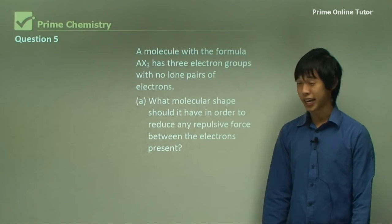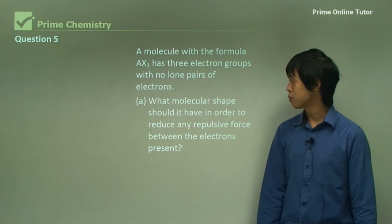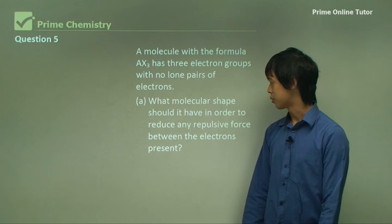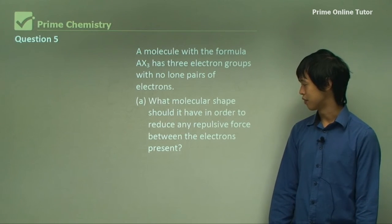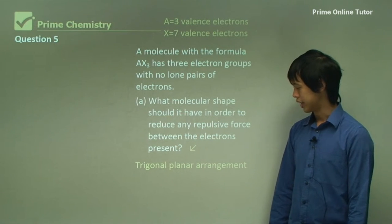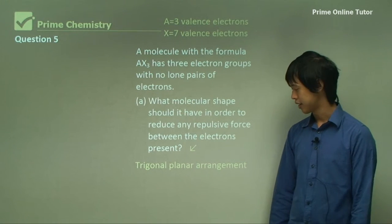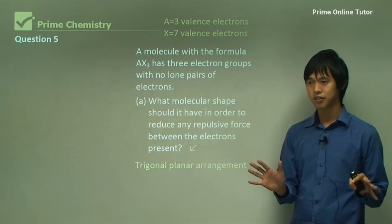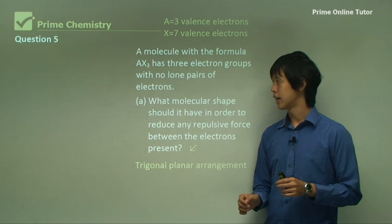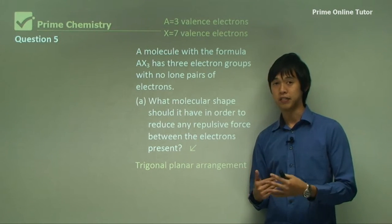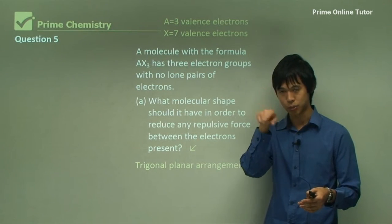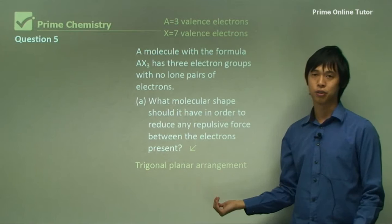So a molecule with formula AX3 has three electron groups with no lone pairs. What molecular shape should it have in order to reduce any repulsive force between the electrons present? It will likely be a trigonal planar arrangement, because it's got three sets of electron pairs. All of them are bonded. So you have to distribute them evenly. And the way to do that is 120 degrees each bond angle to make 360. And so that gives you the trigonal planar.